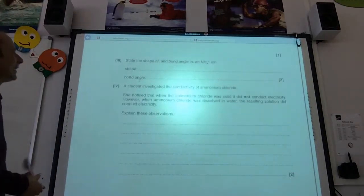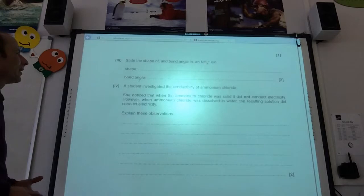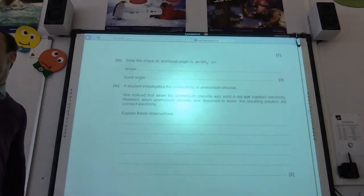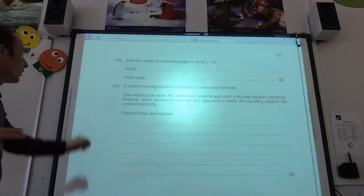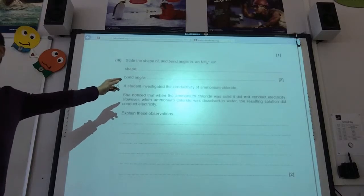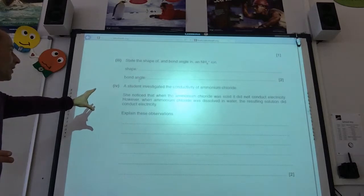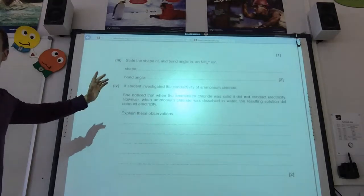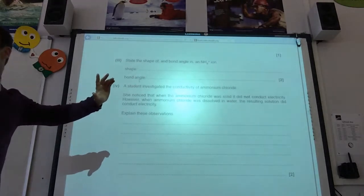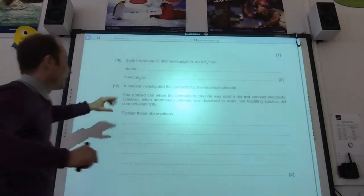So, the shape and bond angle in an NH4 plus ion. So, the shape now is going to be tetrahedral. Bond angle 109.5 degrees. A student investigated. Why is that why my bond angle's got larger? Because I've now only got bonding pairs, haven't I? I've lost my lone pair.